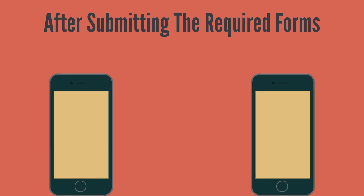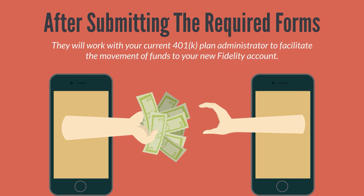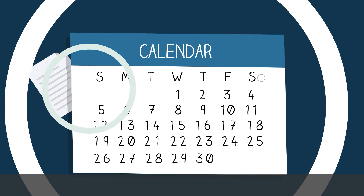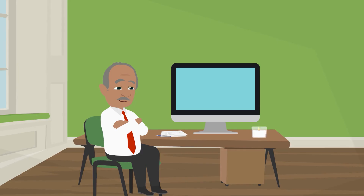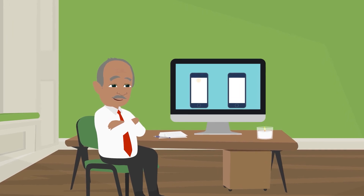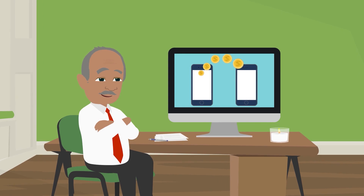After submitting the required forms, Fidelity will initiate the transfer process. They will work with your current 401k plan administrator to facilitate the movement of funds to your new Fidelity account. Depending on the plan administrator's policies and processing time, the transfer may take a few days or weeks to complete. During this time, you can monitor your Fidelity account to verify that the funds have been successfully transferred.